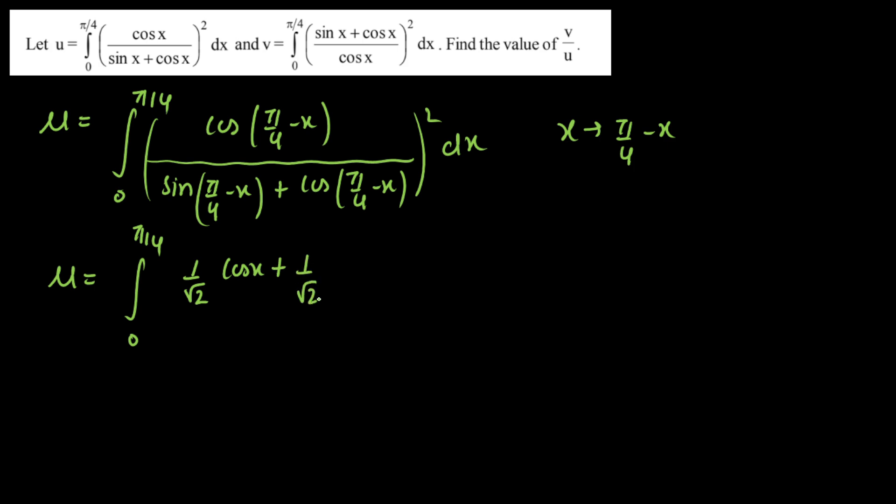In the denominator, I'm going to open sin(A - B), so that is 1/√2. Here we'll get sin A cos B, and here we'll get cos A sin B, so minus 1/√2 sin x.